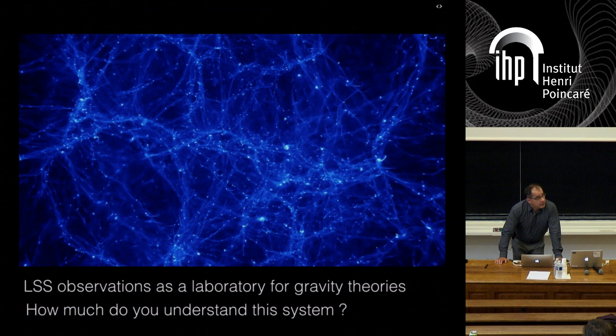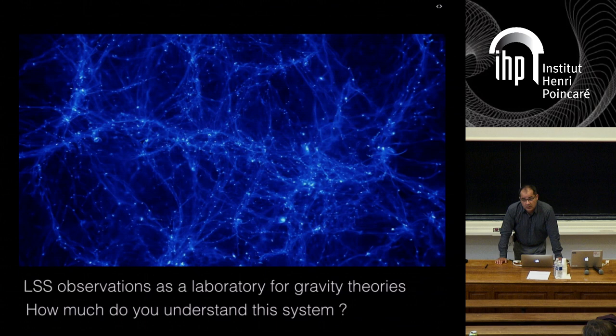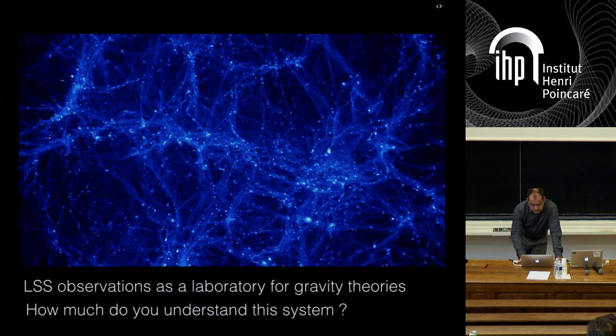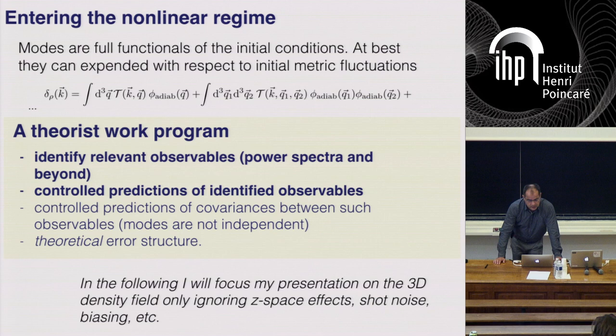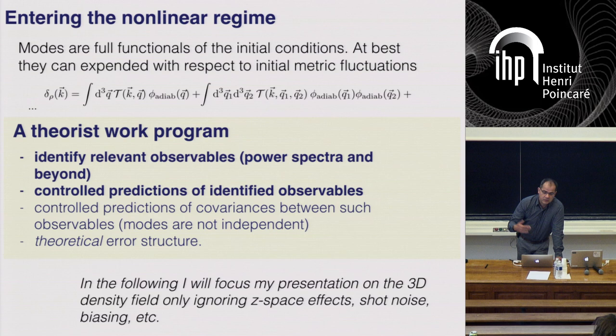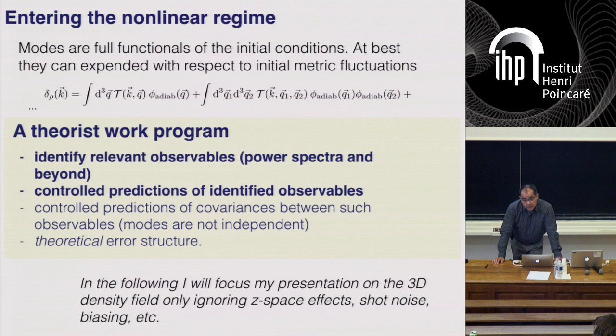That means at some point we should have a good enough understanding of these systems to actually use these observations as laboratories. We have to ask ourselves: how much do we understand this system, and where do we understand it accurately enough? One reason it's a difficult question in the case of large-scale structure is because of its nonlinear evolution.